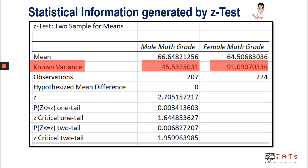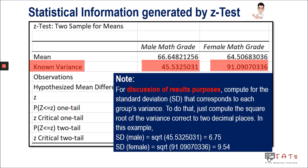The second information in this table is the known variance. However, for discussion purposes, we will be using the standard deviation instead of the variance. To compute the standard deviation, all we have to do is get the square root of the corresponding variance of each group. For the male group, the standard deviation is the square root of 45.53, which is 6.75, and for the female group we have 9.54.